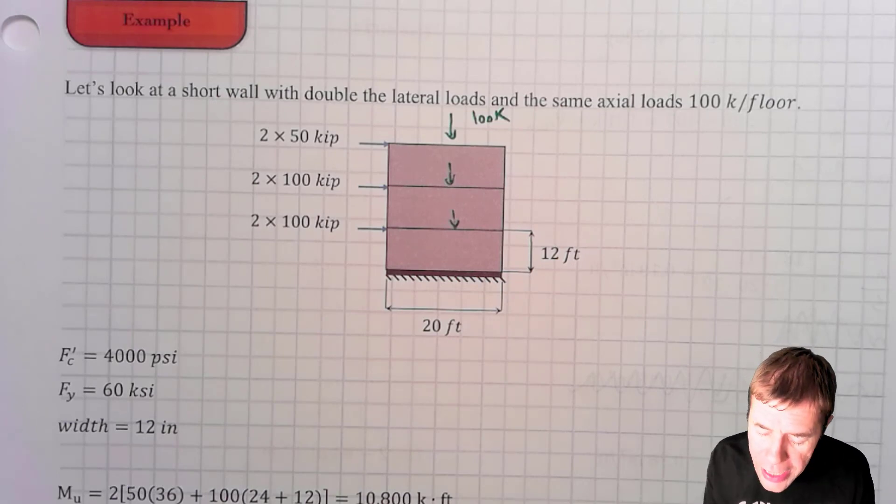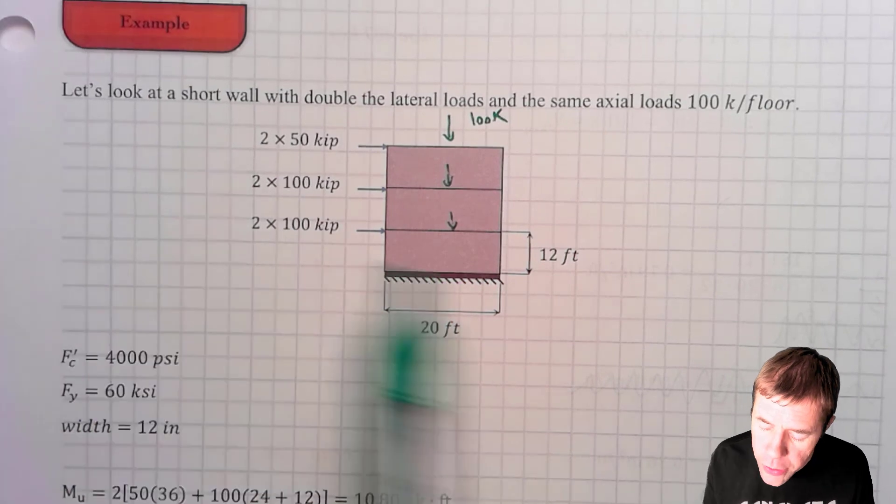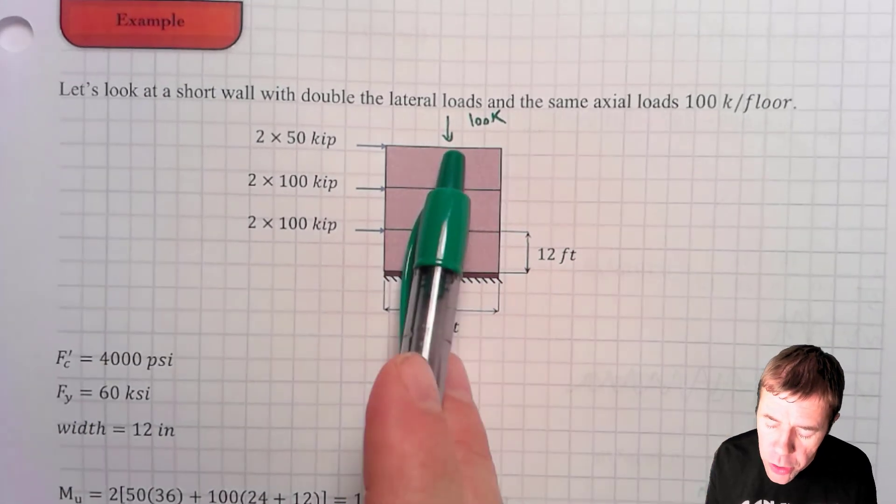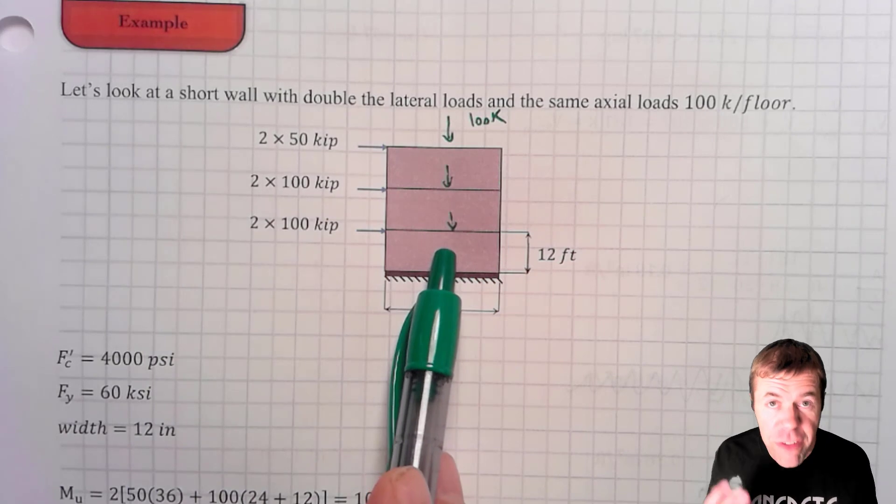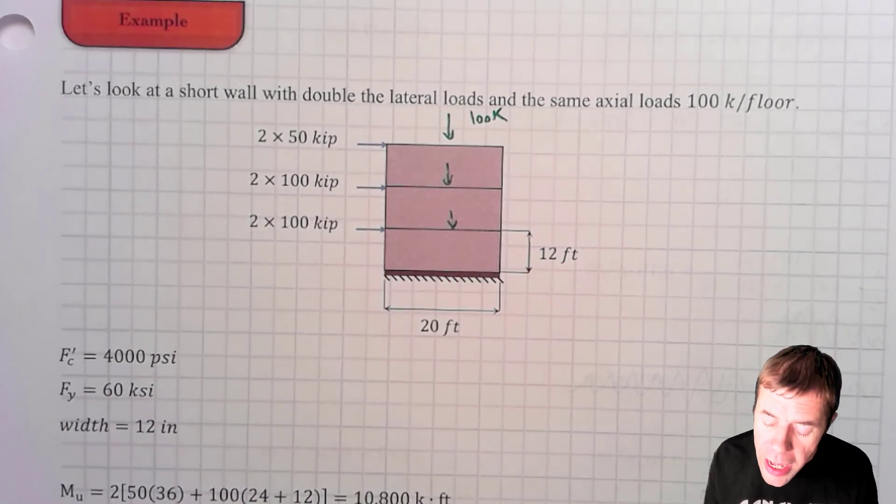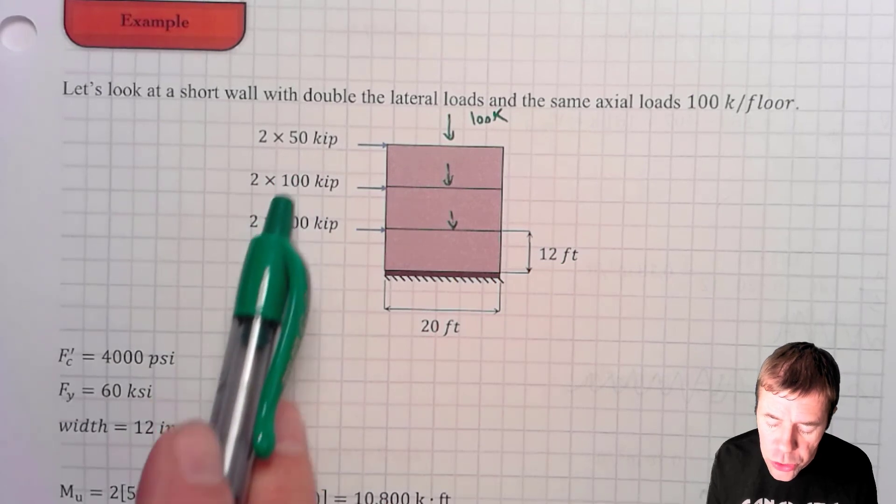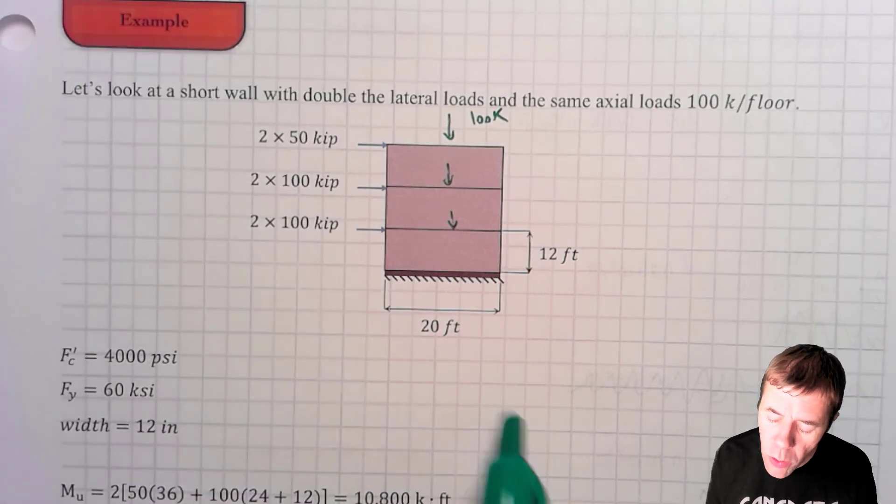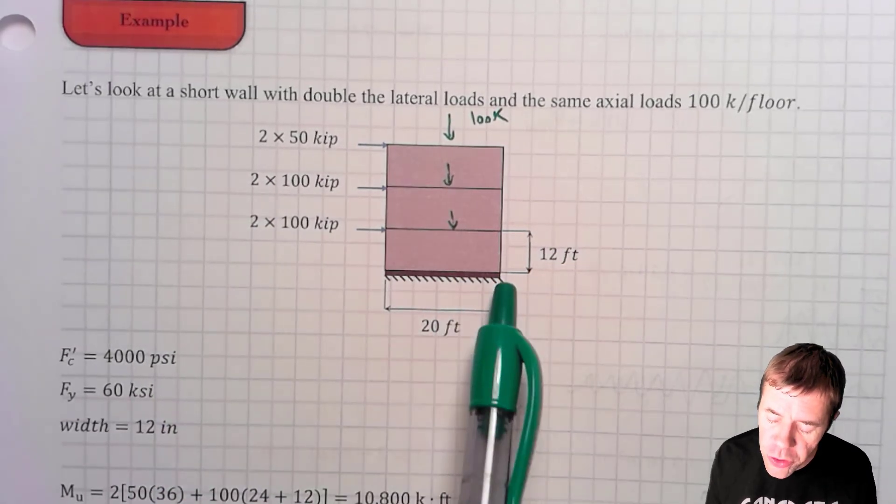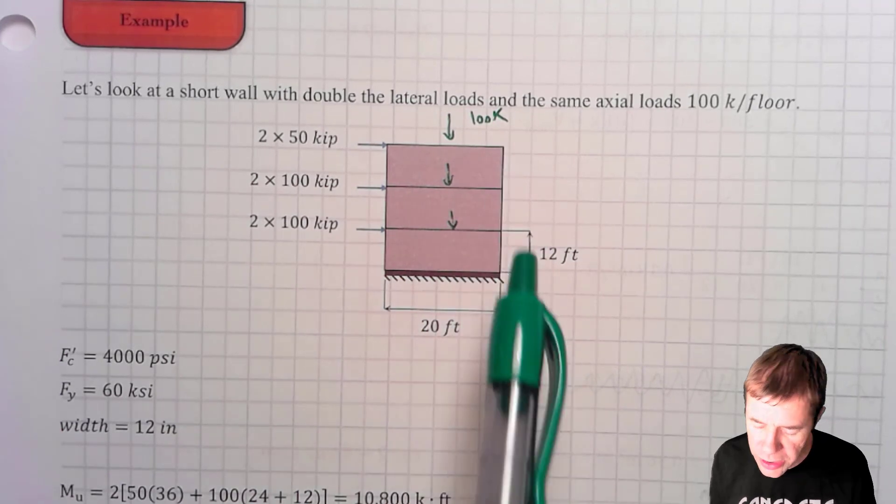We're looking at a short wall that has a hundred kips per floor. Hundred kip, hundred kip, hundred kip coming down on top of the wall. You'd find that from the tributary area. It's got wind loads or lateral loads coming from the side and you can see the values.